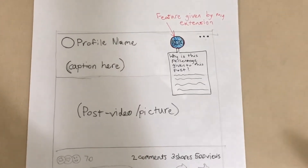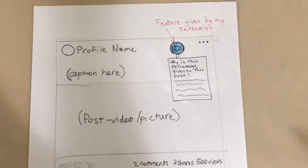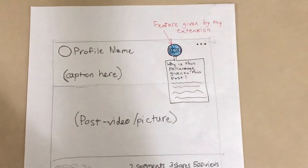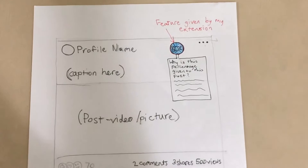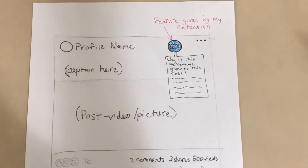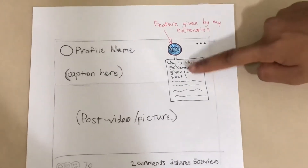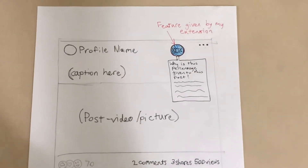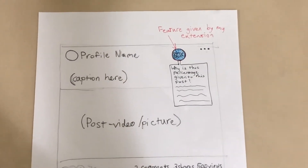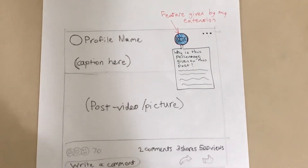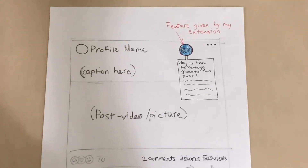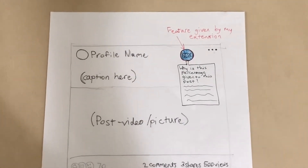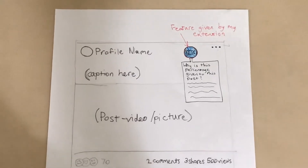If a user of the social media app clicks on the percentage button next to the post that shows up on their feed, the real information related to the keywords in the post, or an explanation of why the post received that particular percentage, will appear. This will educate users on the correct information.